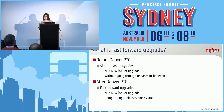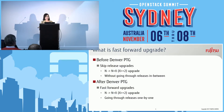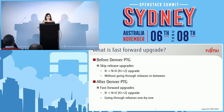Before talking about our tool, first I want to introduce what fast-forward upgrades are. Before the Denver PTG, people had been talking about skip-release upgrades, where basically we do the upgrade from N-release to N plus X-release, where X is normally greater than or equal to 2, and the main point is we do not need to go through the releases in between.